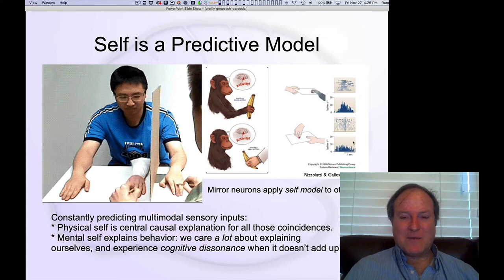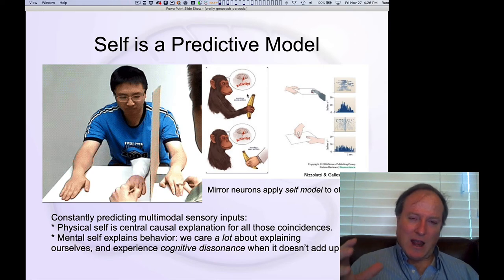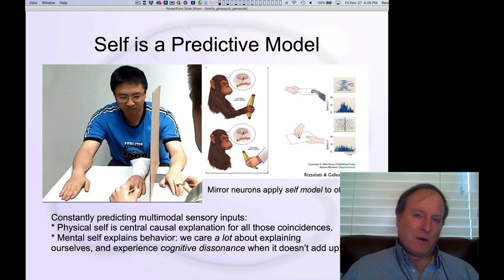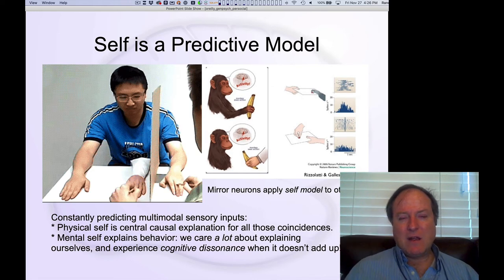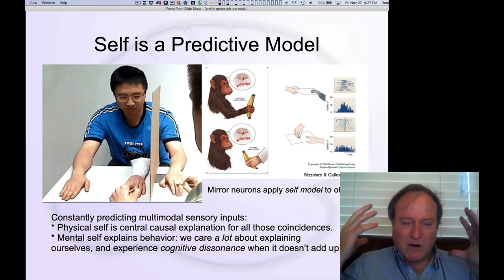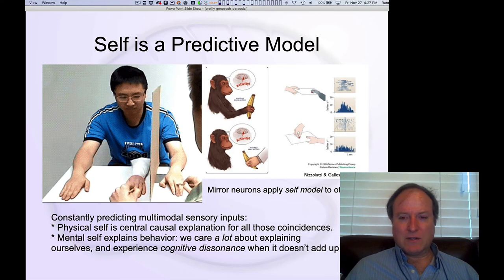Another aspect of this self-model comes from studies of mirror neurons. Rizzolatti and colleagues discovered that there are neurons in the frontal cortex that respond to self-initiated actions in the same way as seeing another person execute those same actions. We're able to see other people performing actions and encode them using the same internal representations we have for our own personal actions. This ability to map what's happening outside in other people onto our own motivational structures reflects how strong that self-model is.